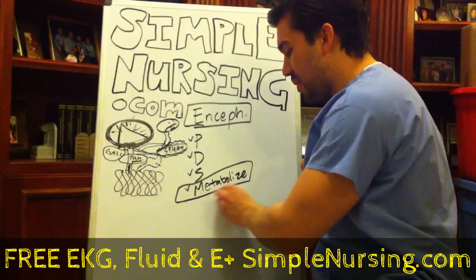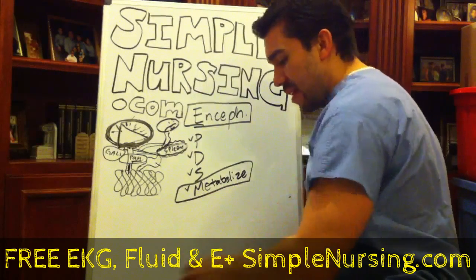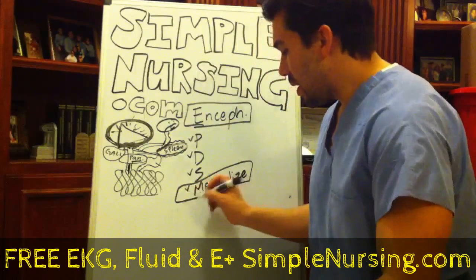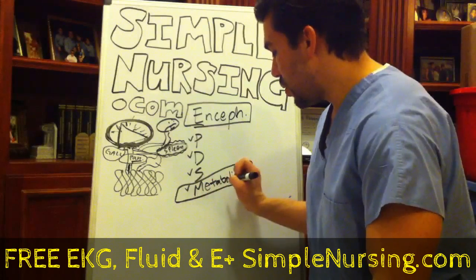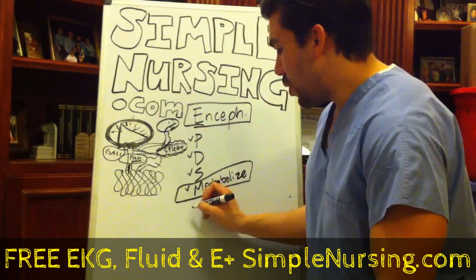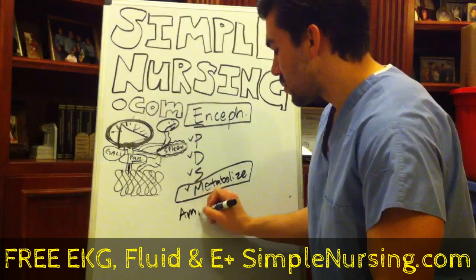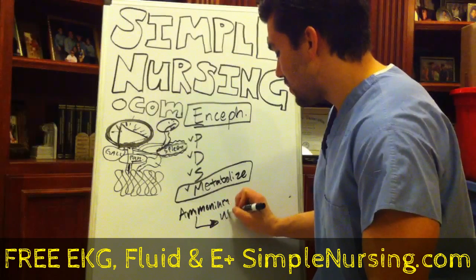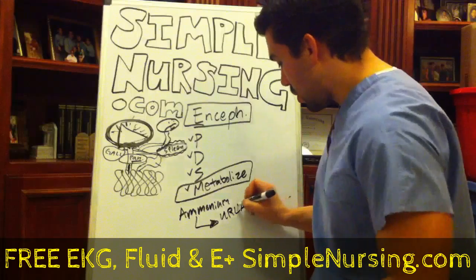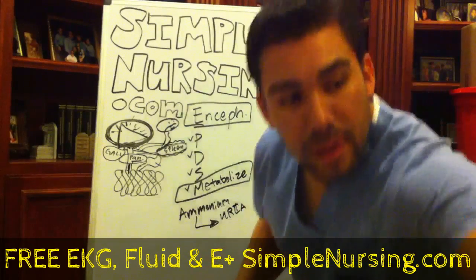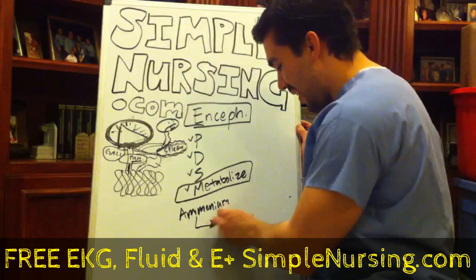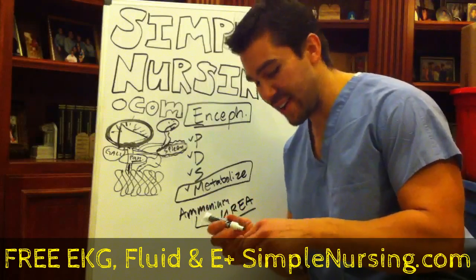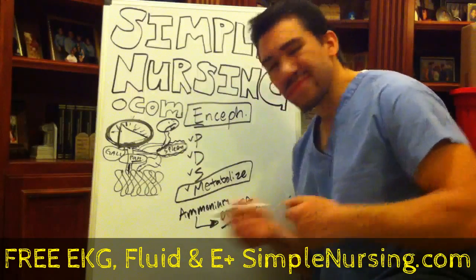What does metabolism have to do with encephalopathy? If you saw my very first liver lecture, you would know that your liver metabolizes ammonia into urea. Ammonia turns into urea.